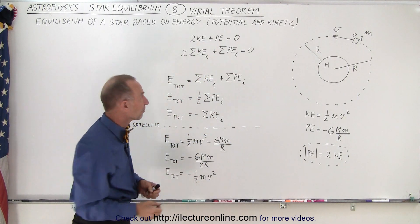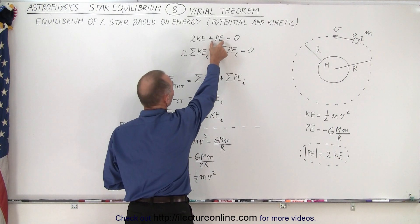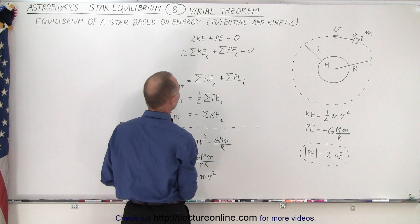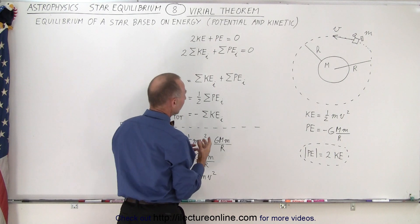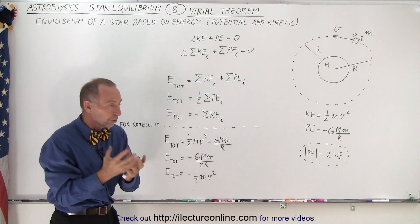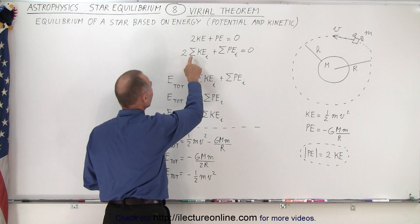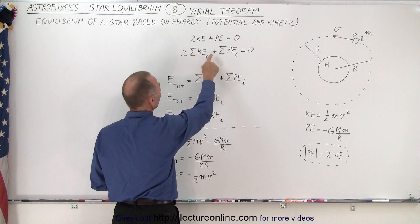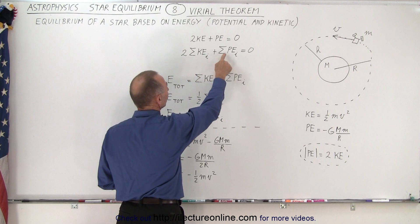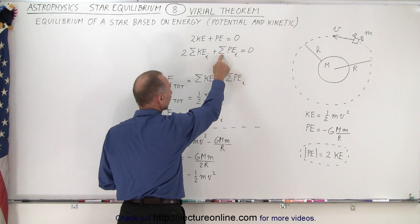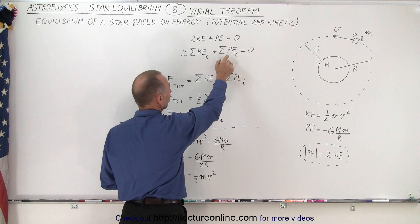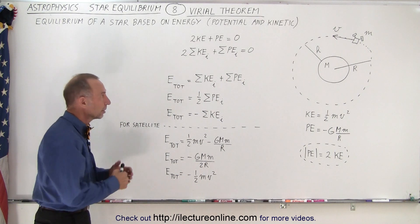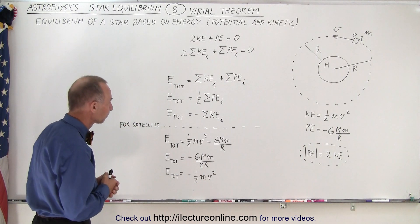That seems quite obvious because the magnitude of the potential energy is twice the magnitude of the kinetic energy, and the potential energy is negative, so when you add them you get zero. If you then think of all the little components of the star, two times the sum of all the kinetic energies of all the atoms in the star plus the sum of all the potential energies of all the atoms inside the star should therefore get zero — and that's essentially the basis of the Virial Theorem.